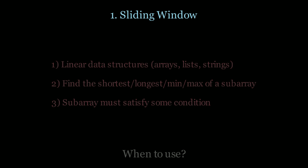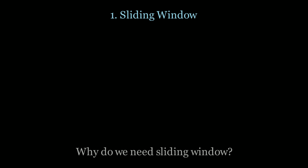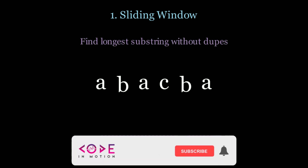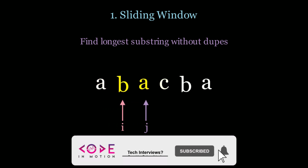Now let's take a look at why we actually need this technique. If we don't have the sliding window and we want to find the longest substring without duplicates, notice that we need to use a double for loop.